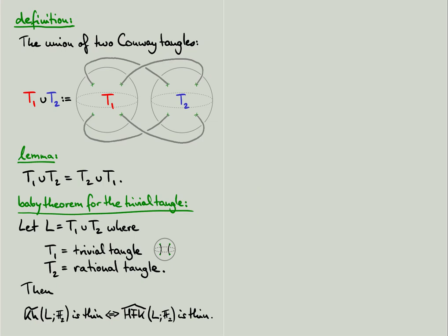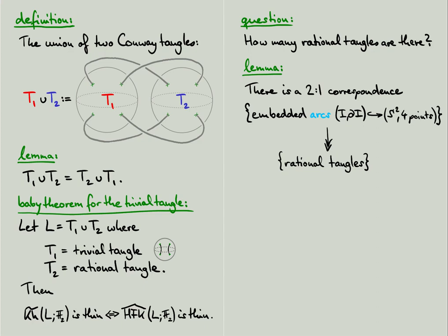Before we come to the proof of this statement, I first want to address the following question. How many rational tangles are there? Can we classify them? The first step towards answering this is the following lemma. There is a two to one correspondence between embedded arcs connecting two out of the four marked points on the sphere and rational tangles.